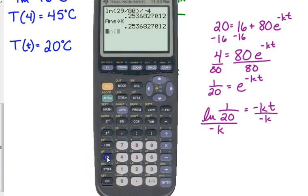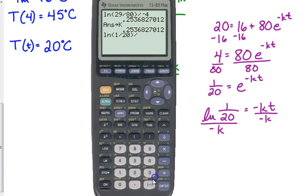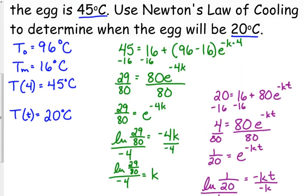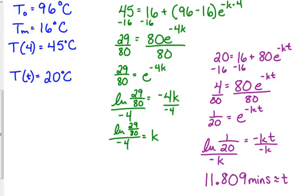We're solving for T. It's stuck in that exponent. So, again, we need log form. The natural log of 1 over 20 is equal to negative KT. So, then we can divide by negative K. So, I can go to my calculator and type in the natural log of 1 over 20. Close my parentheses. Divided by negative K. Okay, and it will give me the correct answer. 11.809 minutes is approximately how long it takes for the egg to reach 20 degrees Celsius. Okay, it took 4 minutes to reach 45 degrees. So, it makes sense.